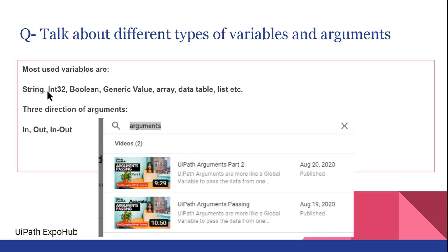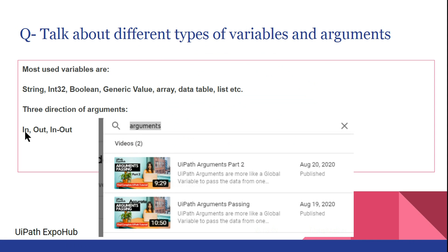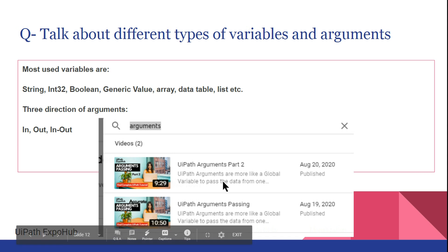The most used variable types you should know are: string, Integer32, Boolean, Generic Value, Array, DataTable, and List. For arguments, when creating one, you can set it as In, Out, or In/Out — those are the three different types.